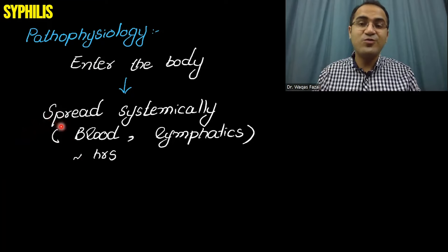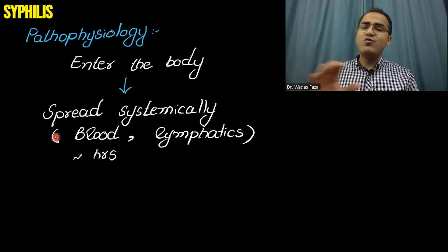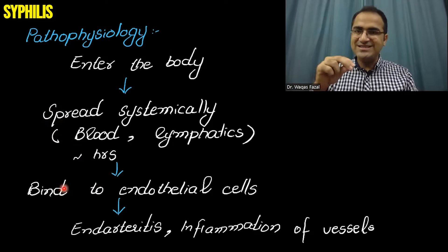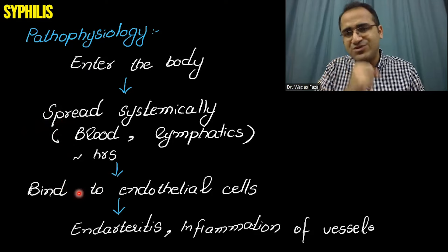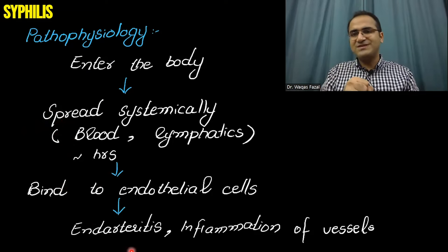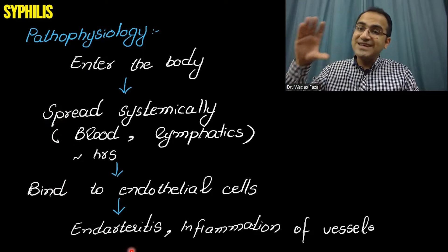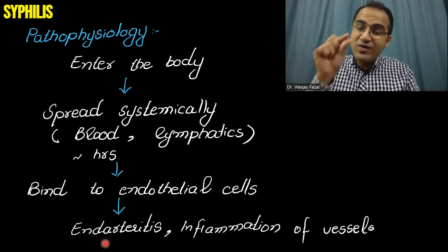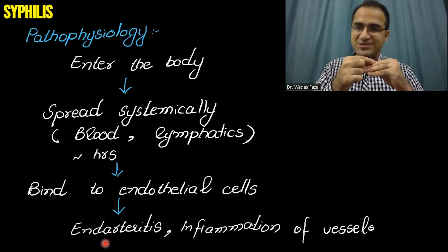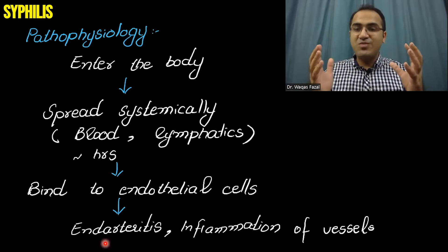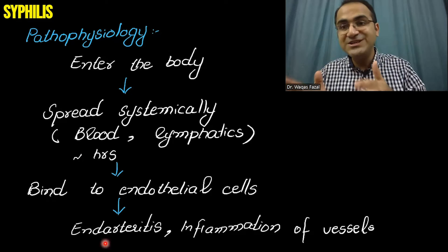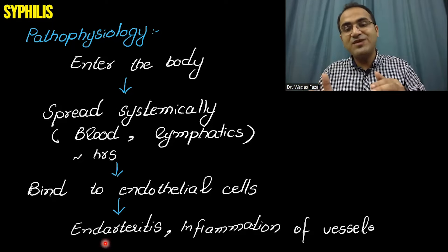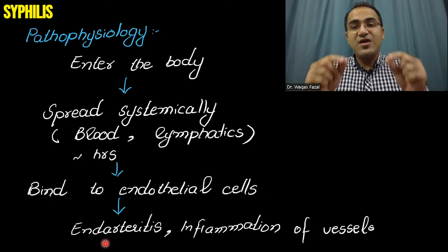As soon as Treponema pallidum contacts the body, there is rapid spread via blood and lymphatics within hours. Treponema pallidum then binds to the endothelial cells of the vessels and causes inflammation of the vessels called endarteritis. This is important because it affects the vessels supplying the nerves — the nerves do not get blood properly and the nerves die. Therefore, many of the lesions in syphilis are painless. It also affects the aorta in tertiary syphilis, since the vascular supply is compromised by endarteritis.